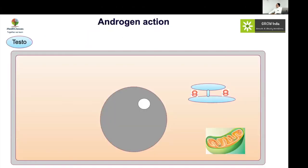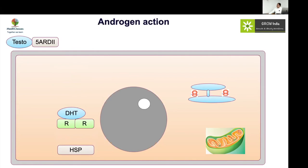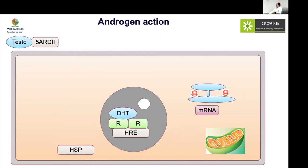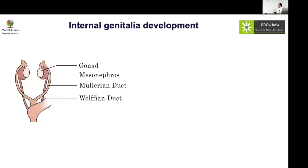Testosterone is converted via 5-alpha reductase into DHT, which crosses into the cell and acts on the androgen receptor — an intracellular receptor that enters the nucleus as a transcription factor, regulating protein production. Testosterone can also act on this receptor, but with much lower potency. In 5-alpha reductase deficiency, lower initial DHT levels cause genital abnormalities; at puberty, soaring androgen levels can partially compensate through direct androgen receptor activation.